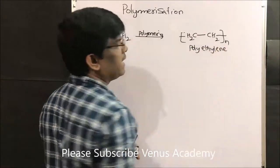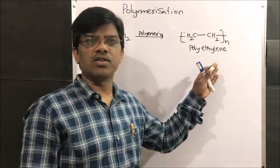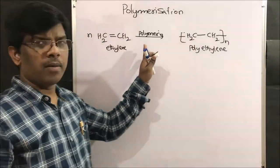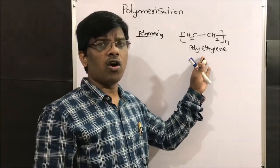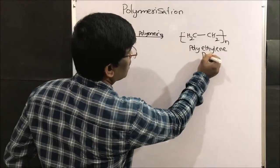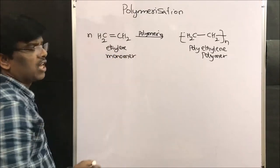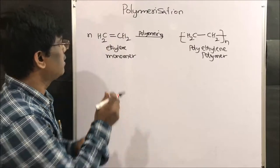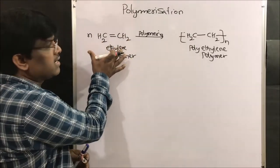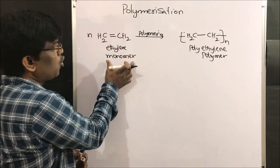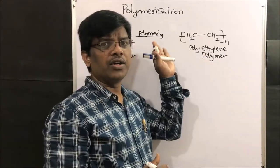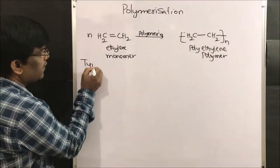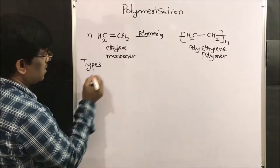Polyethylene is commonly also called polythene — yes, polythene bags. Alkene upon polymerization is going to give polyethylene, so it is a polymer. Now for terminology: mono means one, poly means multiple. The compound on the left-hand side of the reaction is the monomer, and the compound obtained after polymerization is known as the polymer.